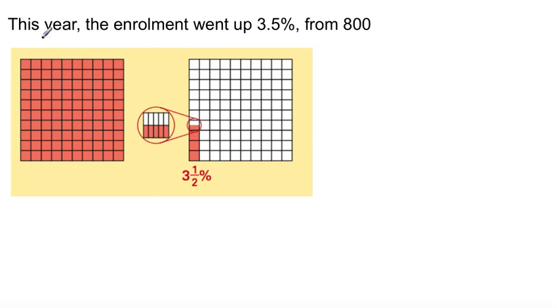This is a 100 square. So basically, this represents 100% right here. Now, if I were to say, how does this represent 800?